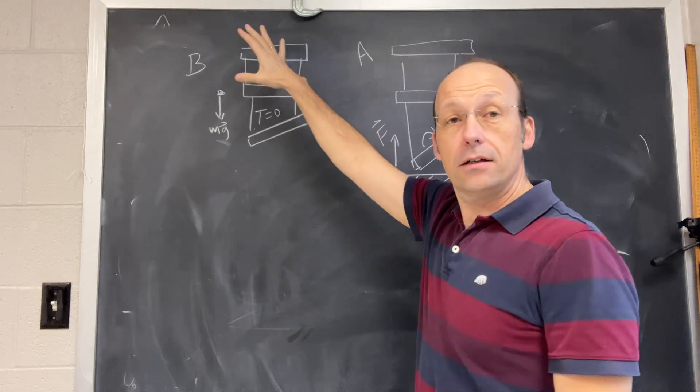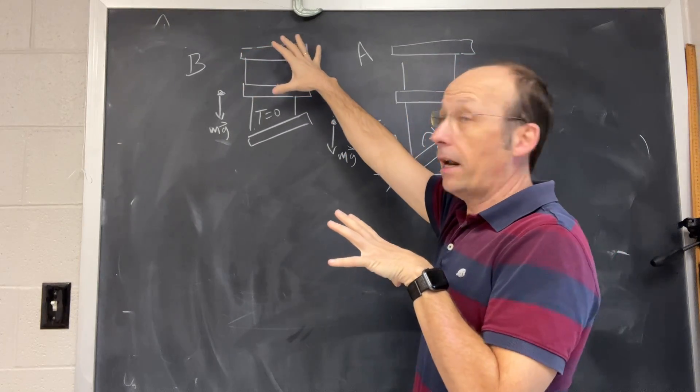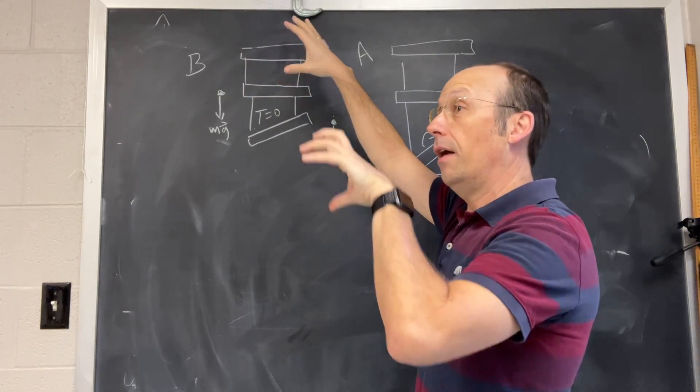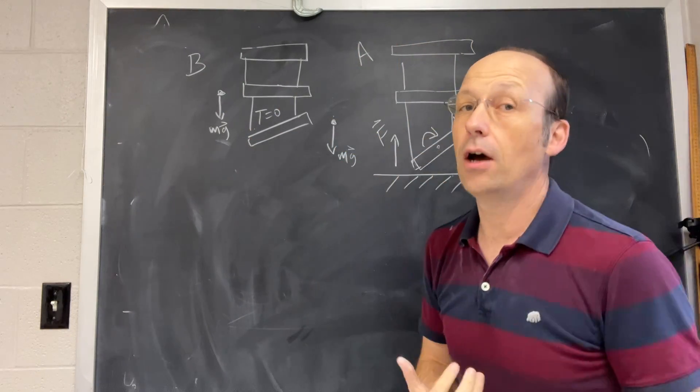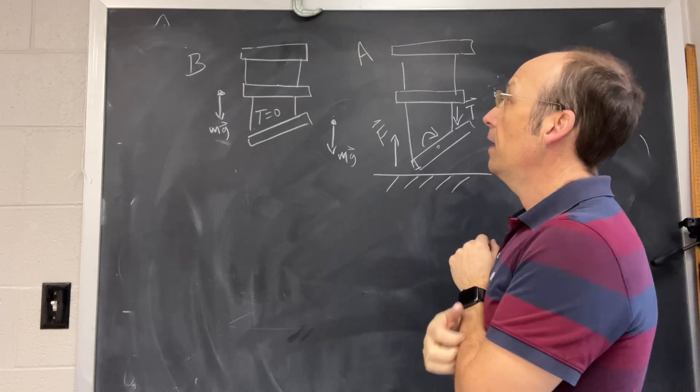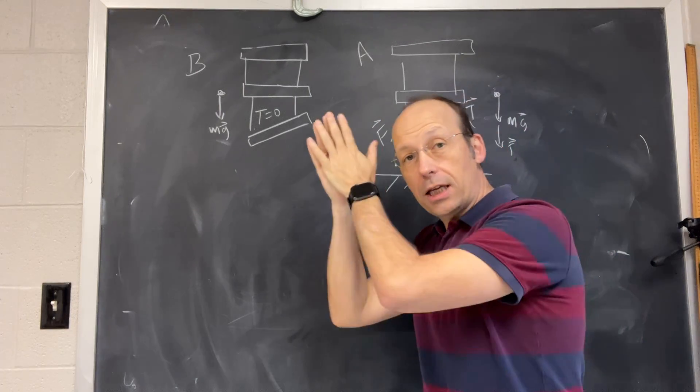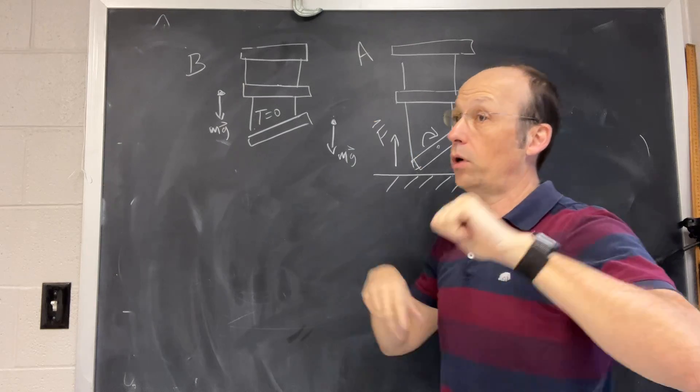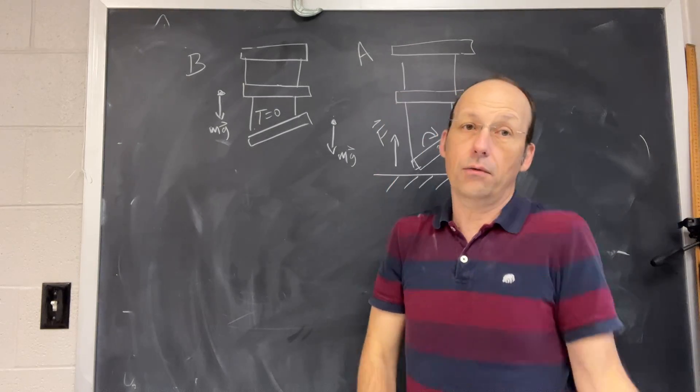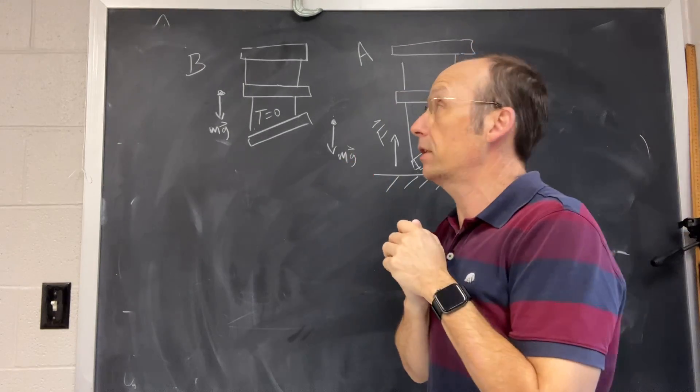The video shows two ladders that are dropped and they're falling together, A and B. I put them backwards because I have no idea why I did that. One of the ladders just keeps falling and the other one hits a table. The bottom part starts hitting a table and the question is which one's going to fall faster, which is going to have a greater acceleration.